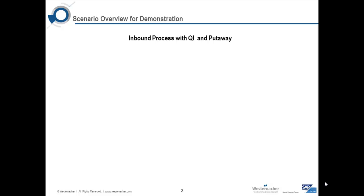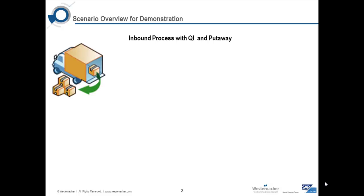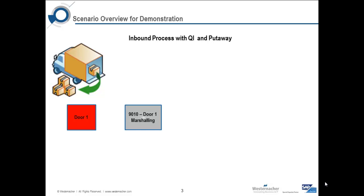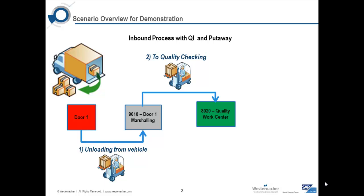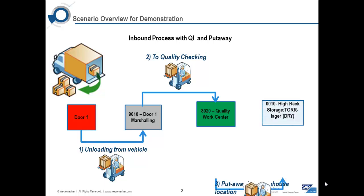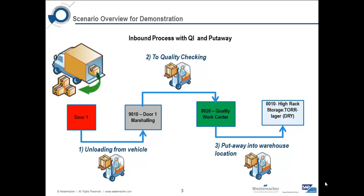So when a truck arrives it is directed to a specific door where it will be unloaded into a marshalling lane, a staging area. It will then be moved to the quality station where it will be quality inspected. Once it has been checked, a final move will be completed to its final destination in the warehouse. Now let's view how we initiate this process in the system.